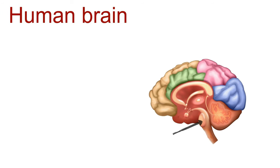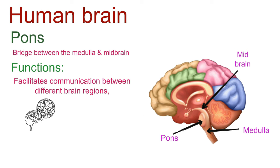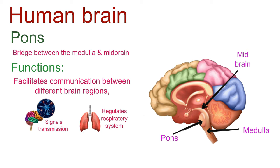Its role is so crucial that it's rightly called the life support system of our body. Moving up, we encounter the pons, a bridge between the medulla and midbrain. This relay station facilitates communication between different brain regions, ensuring seamless transmission of signals. In collaboration with the medulla, the pons regulates our respiratory system and hosts nuclei for cranial nerves, influencing facial movements and sensation.